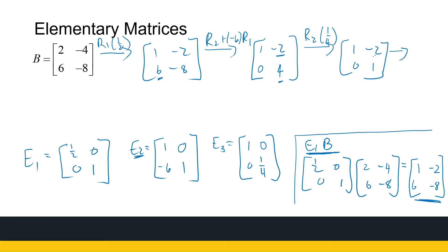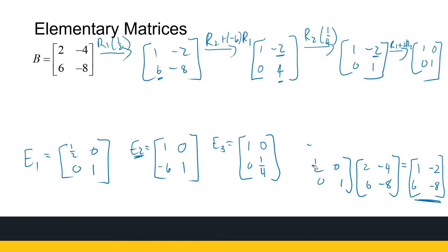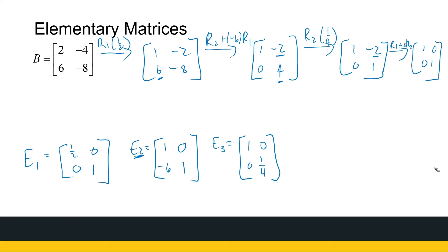The last step is to get a zero in the upper-right position. We take row one and add two times row two to it, giving the identity matrix [1, 0; 0, 1]. The corresponding elementary matrix E4 is obtained by performing this row operation on the identity: take row one and add two times row two, giving E4 = [1, 2; 0, 1].